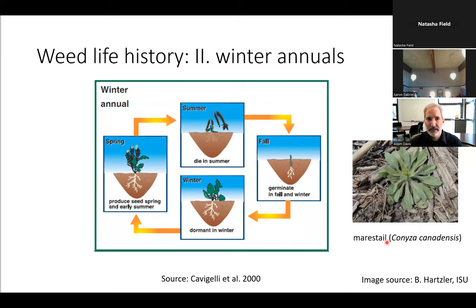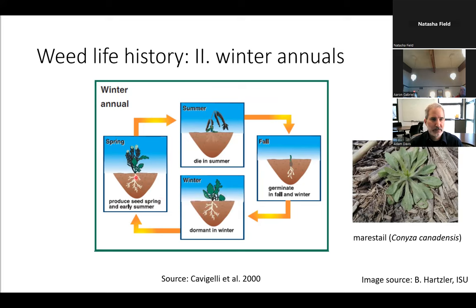Marestail is a good example of a winter annual. A winter annual generally germinates in early fall and winter, gets to a dormant state in winter, produces seed in spring and early summer, and then dies in summer after reproduction.